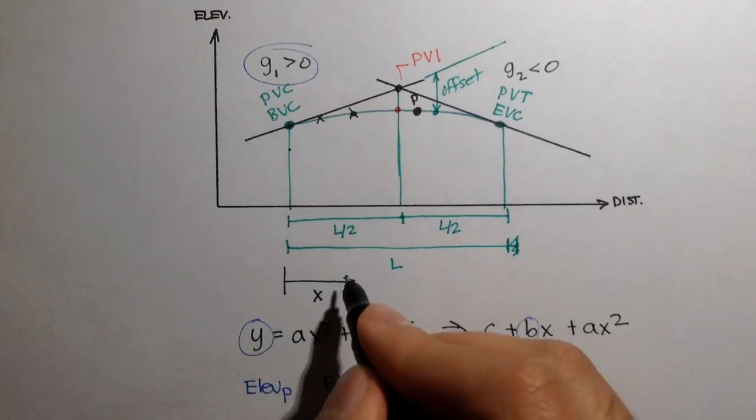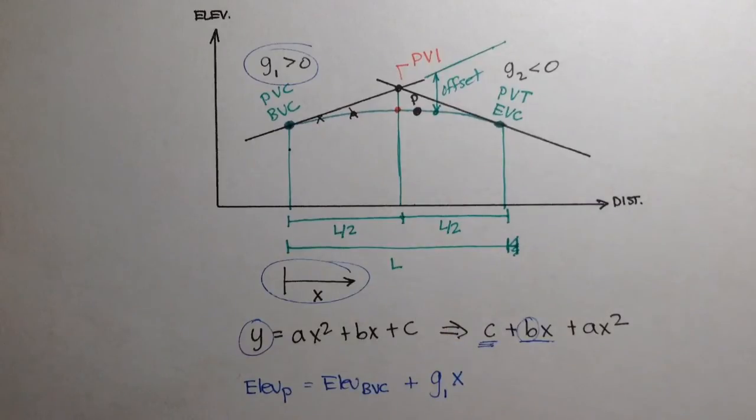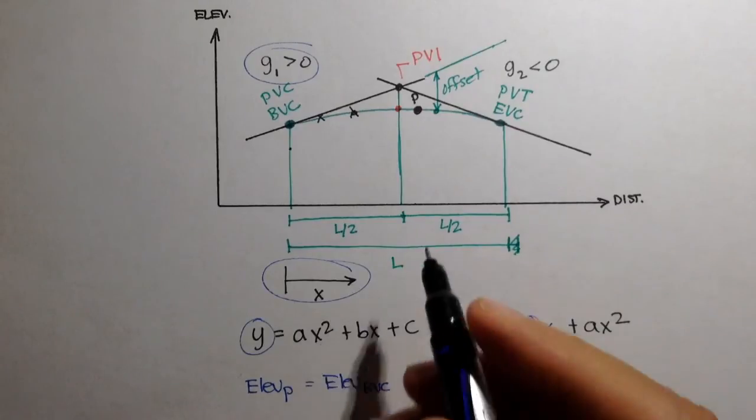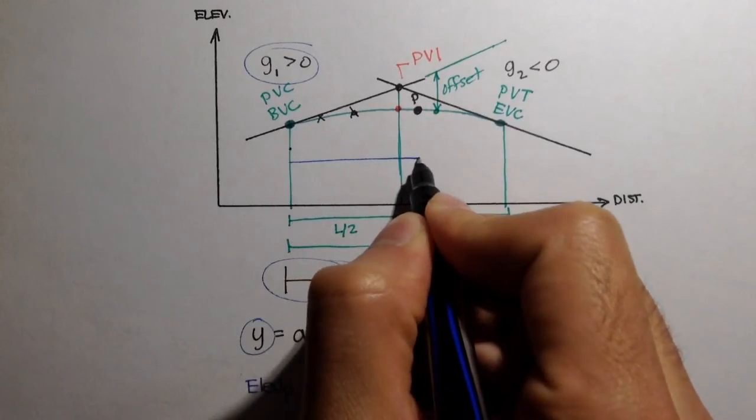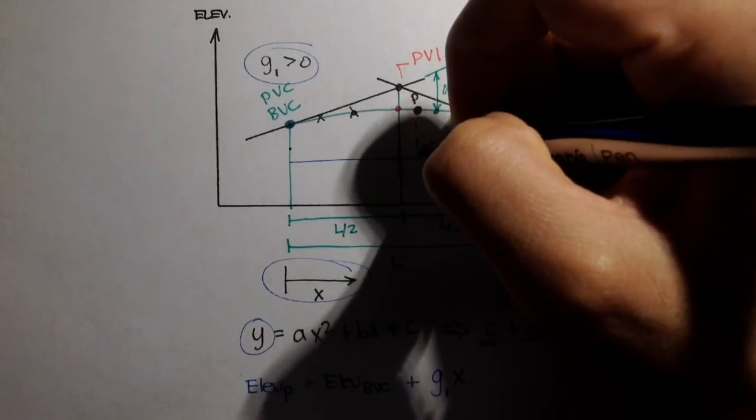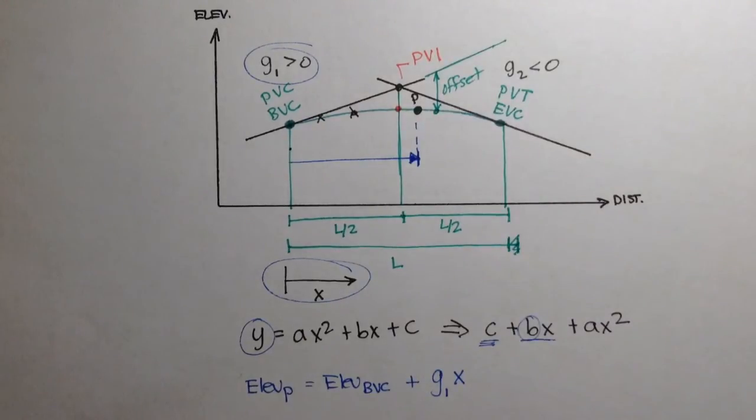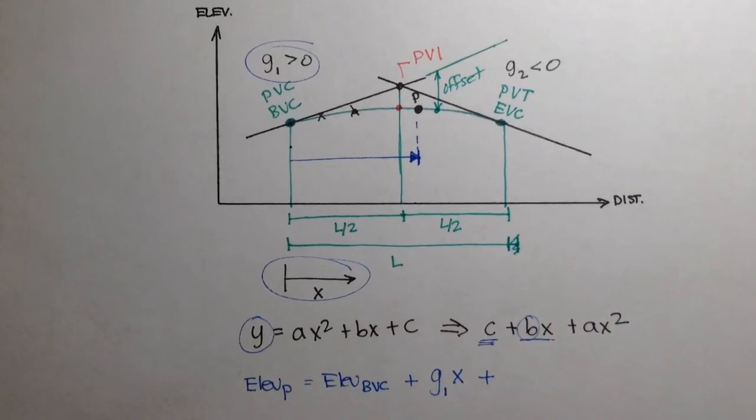And x, remember, is any distance from the BVC to the point we're studying. So in our case, x would actually be this distance right here. And then finally, our last term, which is ax squared, it's kind of a two-part term. Our x is the same x that we have here, right?